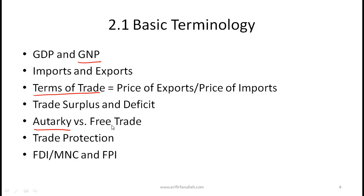Autarky is a term you might not have heard — it's the opposite of free trade. If a country has a completely closed system with no trade with other countries, restrictions on capital flows, and restrictions on goods going in and out — what you might call a closed economy — that is an autarky. India in the 1970s is an example. Free trade means countries freely allow goods and capital to move across geographic boundaries.